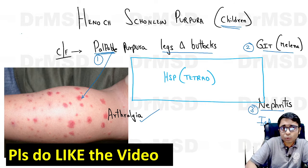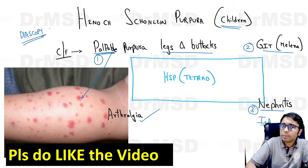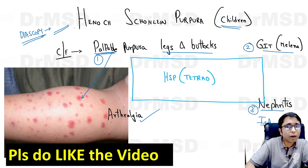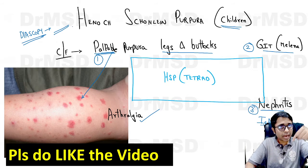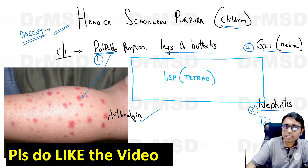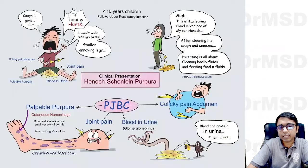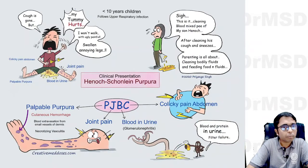If you happen to do a diascopy, what will be the features? Will these lesions blanch or will they not blanch? Try to put your answer in the comment section — I will check the answers.